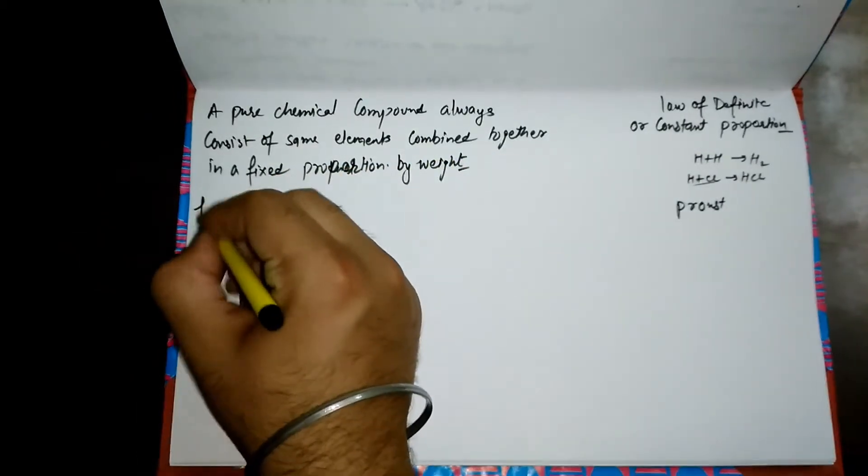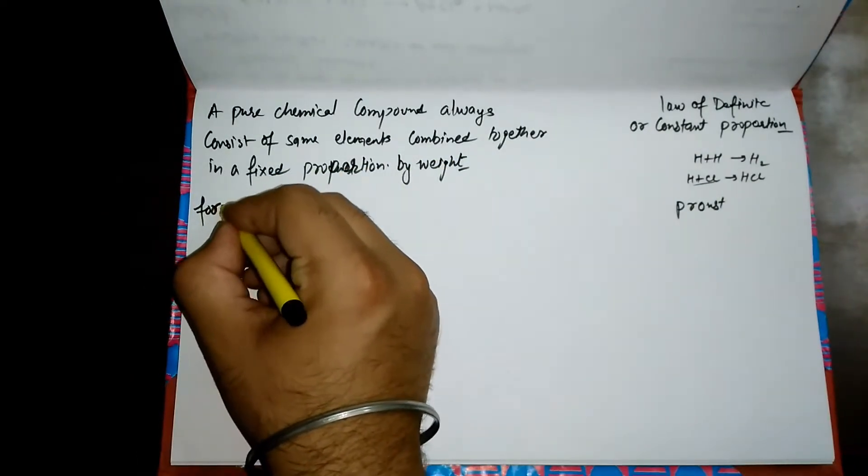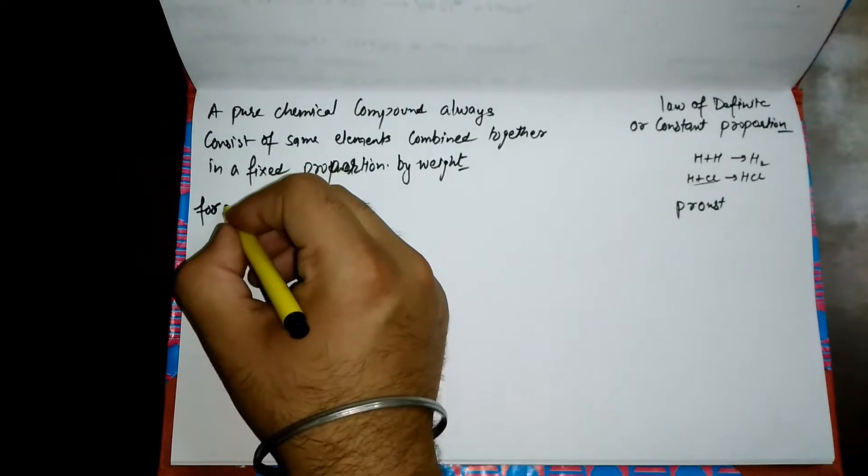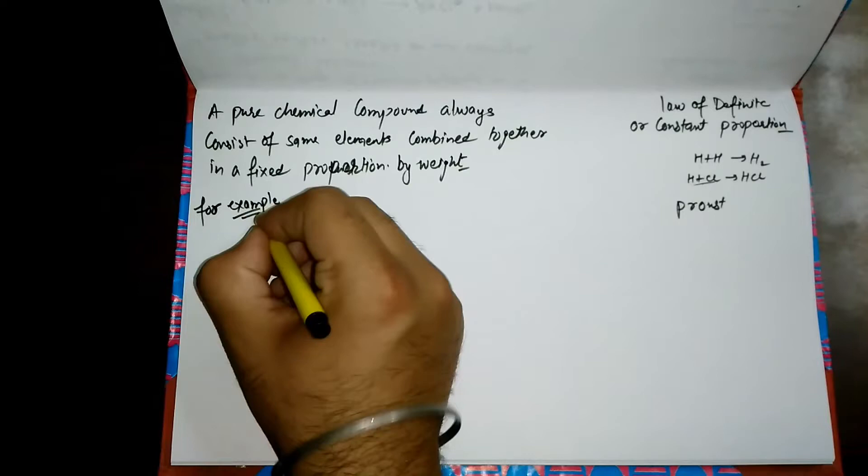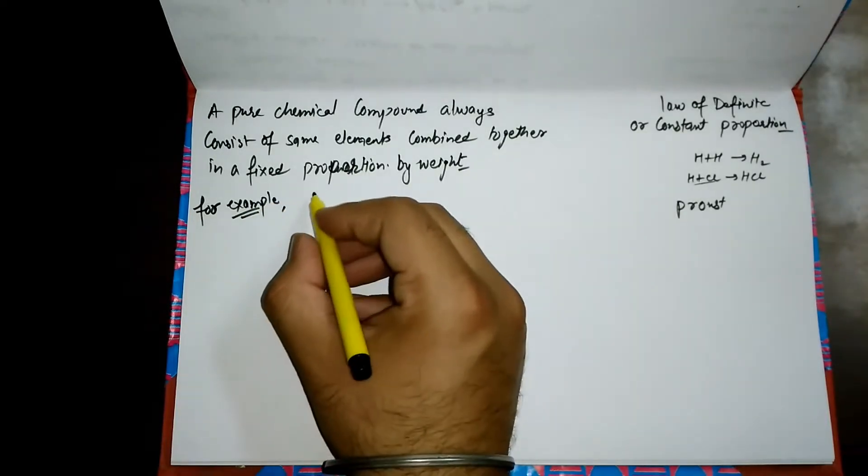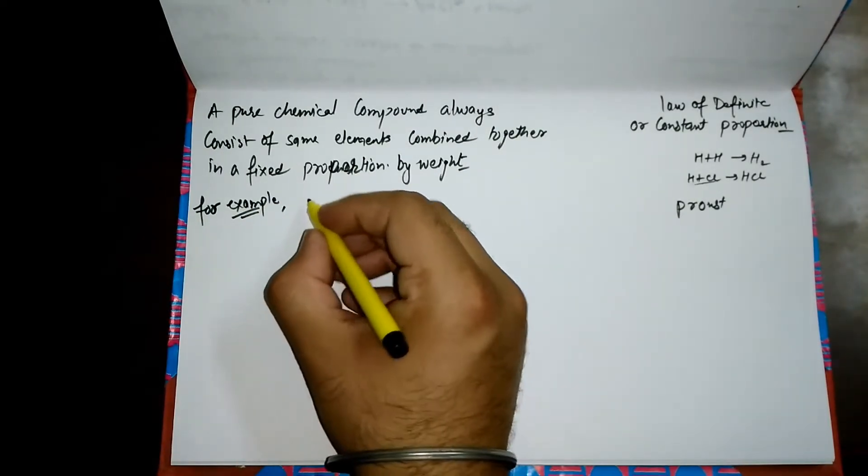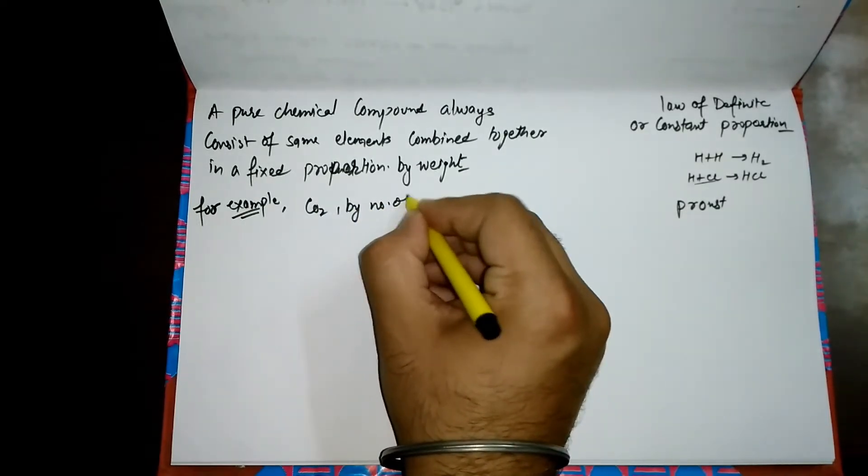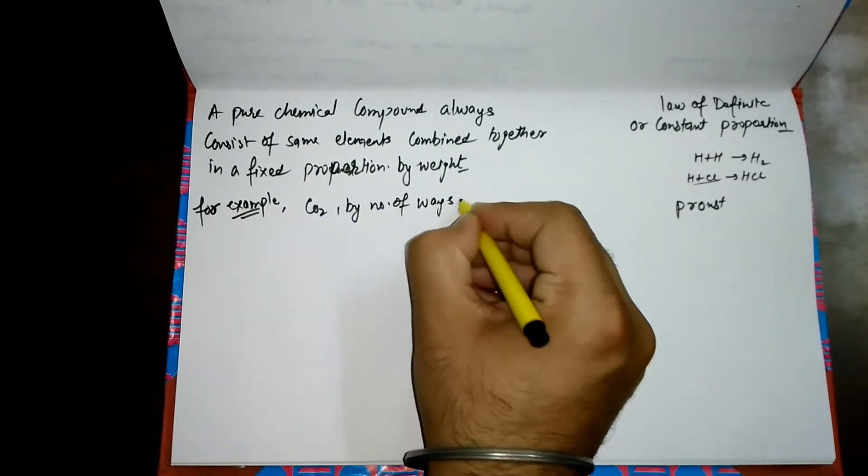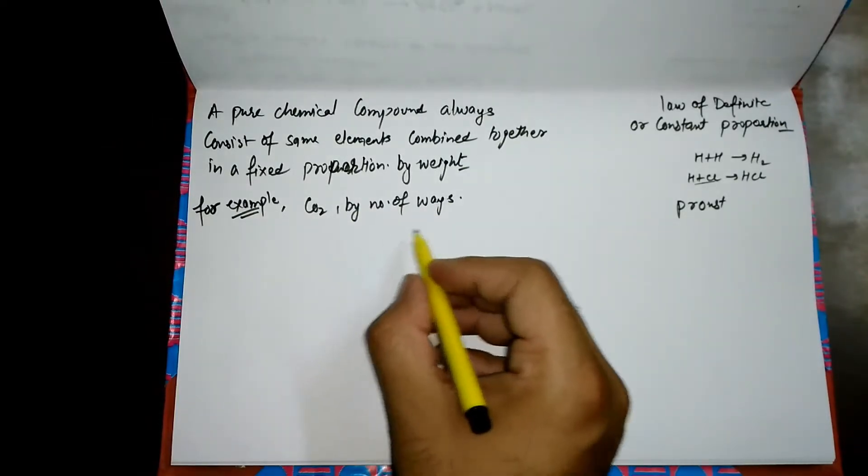If I just give you an example, this concept will be more clear to you. We can create or form CO2 by a number of ways. We are having different ways of generating or forming the CO2 gas.